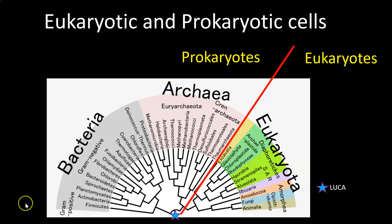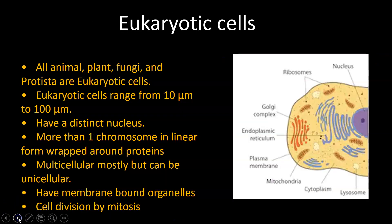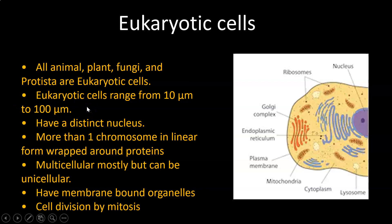Let's look at the distinct characteristics of eukaryotic cells. All animal cells, plant cells, fungi, and protista are eukaryotic cells. Eukaryotic cells range from 10 micrometers to 100 micrometers. Eukaryotic cells also have this characteristic where they have a distinct, membrane-bound nucleus — it's a distinctive structure by itself.